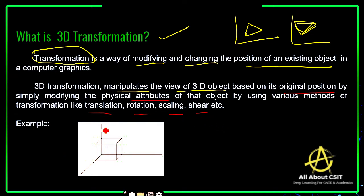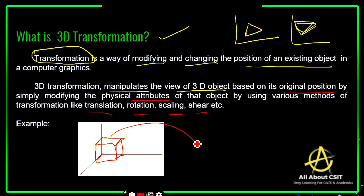Here is an object on a 3D plane. This 3D object has its coordinates — different coordinates are there, which are the original points. Based on the original position, this object is going to change its position, manipulating the view of the 3D object.